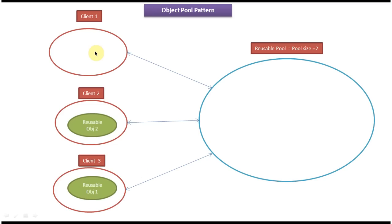This is how the reusable pool shares reusable objects with multiple clients. An important point is that the client is responsible for requesting the reusable object from the reusable pool and also responsible for releasing the object back to the reusable pool. If the client does not release the reusable object properly, it will cause problems and end up giving a lot of issues.